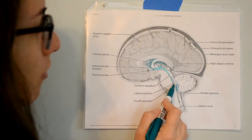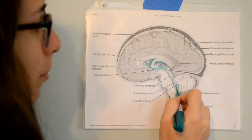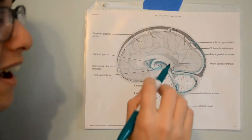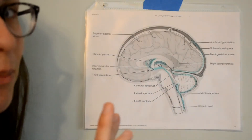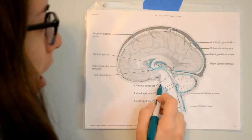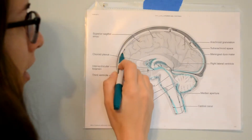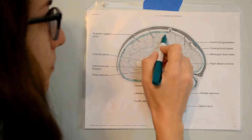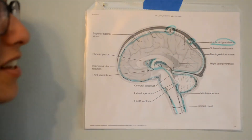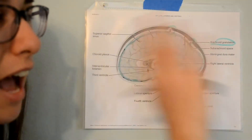From the fourth ventricle, the CSF works its way around the spinal cord. It can move up behind the cerebellum, and then up in between the arachnoid mater and the pia mater, which are two of the three meninges — the layers that encapsulate the brain. It can also travel around the spinal cord and up to the anterior side of the spinal cord and brain. Along the arachnoid mater there are arachnoid granulations, which is essentially where the CSF gets absorbed.